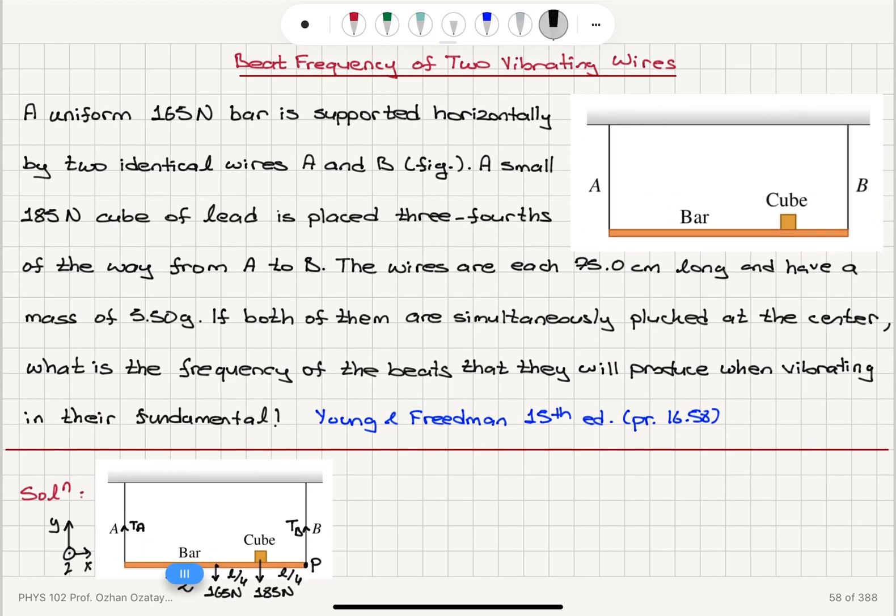And we have an equilibrium situation, so the net force on the y-axis should be equal to T_A plus T_B minus 165 minus 185 equals zero. Therefore, the tensions should add up to 350 Newtons.